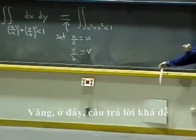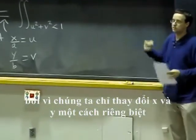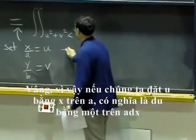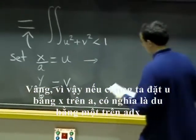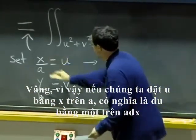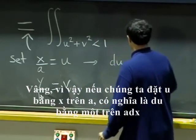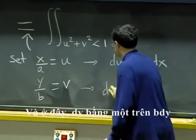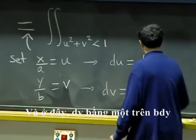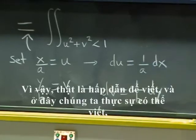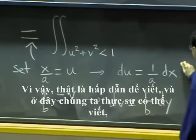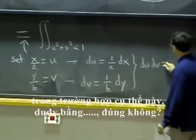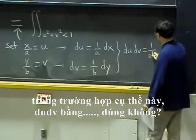Well, here the answer is pretty easy because we just change x and y separately. We do two independent substitutions. So if we set u = x/a, that means du is (1/a) dx. And here, dv is (1/b) dy. So it is very tempting to write, and here actually we can write, in this particular case, that du dv is (1/ab) dx dy.